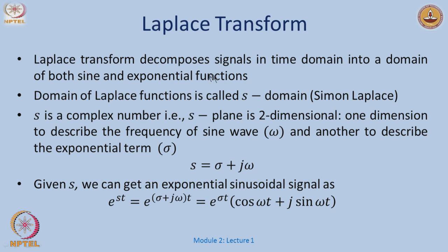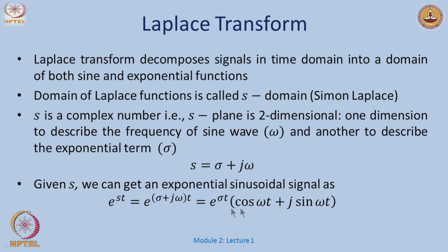The Laplace transform decomposes signals in the time domain into a domain of both sinusoidal and exponential functions. This domain is called the S-domain or Laplacian domain, invented by Simon Laplace — the 'S' comes from Simon. S is a complex number: S = σ + jω, where ω corresponds to the sinusoidal component and σ describes the exponent. Thus e^(St) expands as e^(σt)[cos(ωt) + j·sin(ωt)].